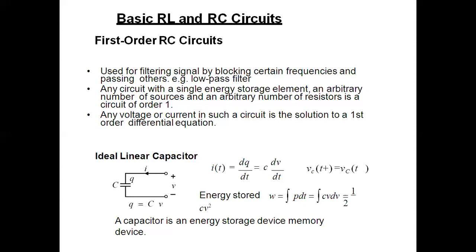The RC circuit blocks certain frequencies and passes others — that is the low-pass filter, passing the low frequencies. Any circuit with a single energy storage element, an arbitrary number of sources, and an arbitrary number of resistances is a circuit of order 1.